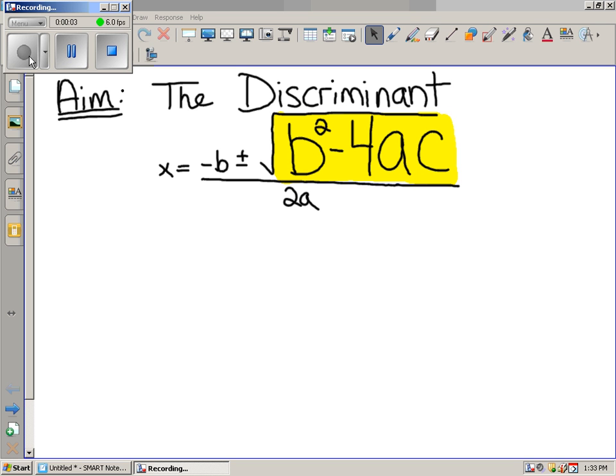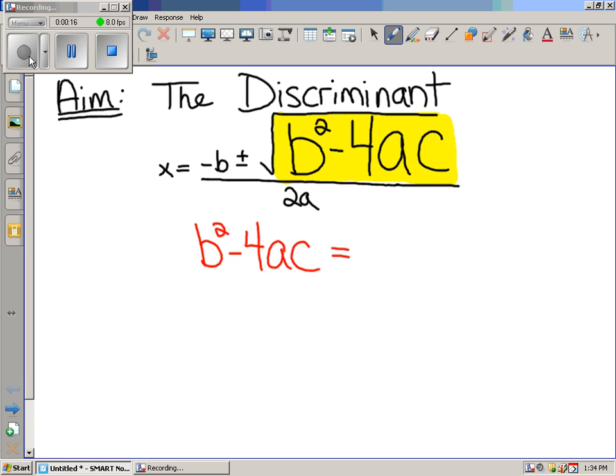Today's discussion is the discriminant, and we have written the quadratic formula. The discriminant is part of the quadratic formula. It's the stuff drawn gigantic. Let's take it out of there and write it down so people can understand. b squared minus 4ac, not the square root part, is the discriminant.